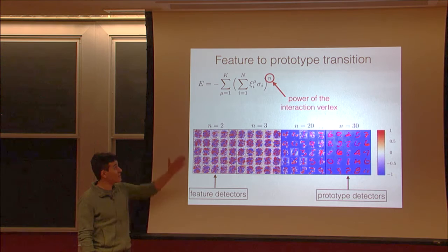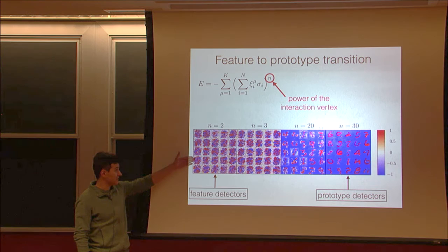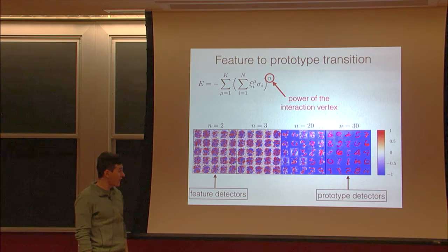The central result of our paper is the feature-to-prototype transition. As an example, we train this dense associative memory on the MNIST dataset of handwritten digits. Here you can see 25 randomly chosen feature detectors for models with n equals 2, 3, 20, and 30.